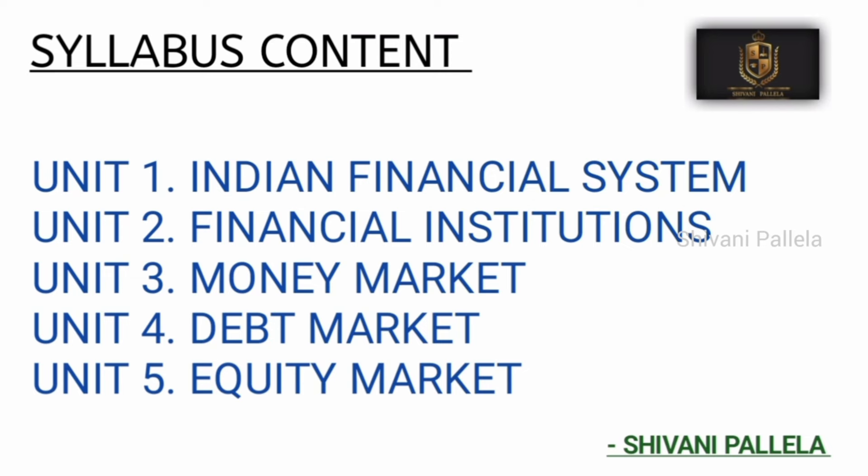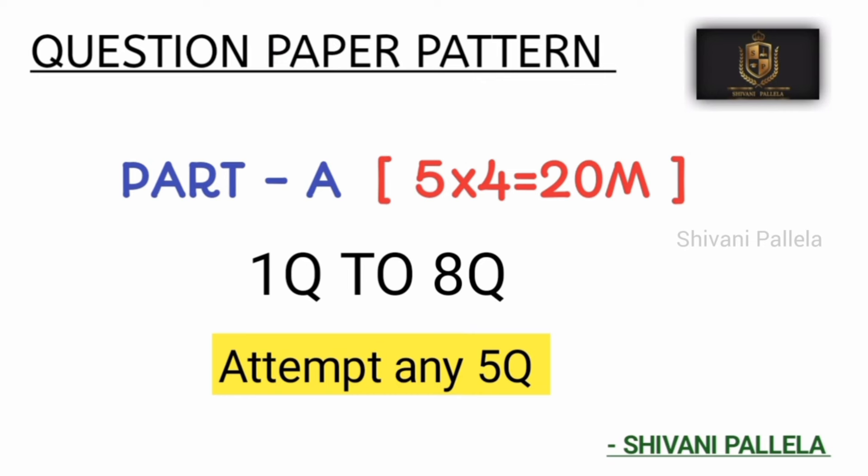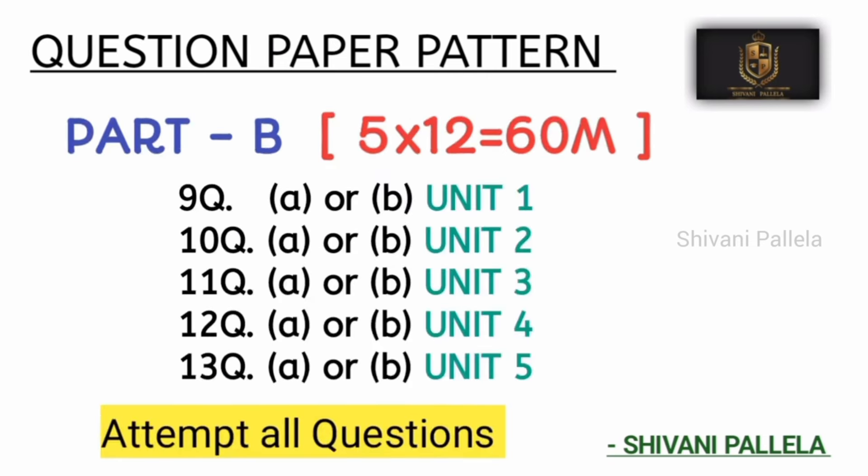Now we will discuss about the question paper pattern. In Part A it consists of total 20 marks — they will ask questions one to eight, and out of eight questions you should attempt any five, which carry four marks each, so five into four equals twenty marks. As each question carries four marks, you need to write at least one to one-and-a-half sides of answer in the answer booklet to score four out of four marks. Some students write only five to six sentences for four marks — you should not do that; minimum one side of answer is a must.